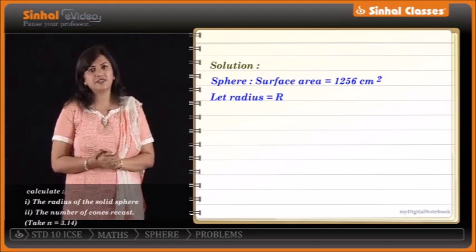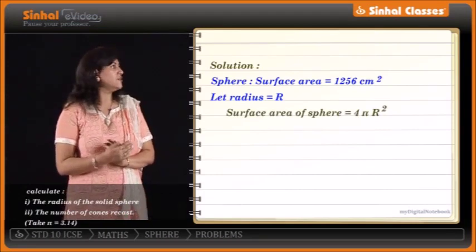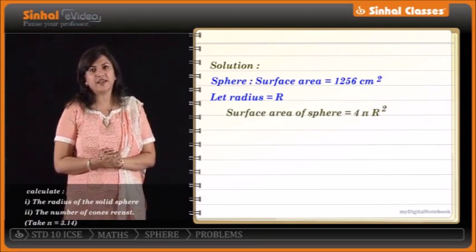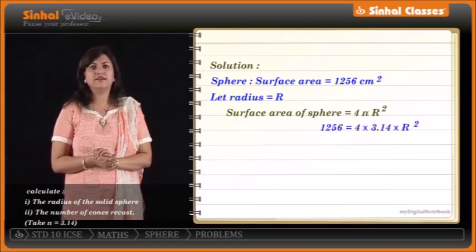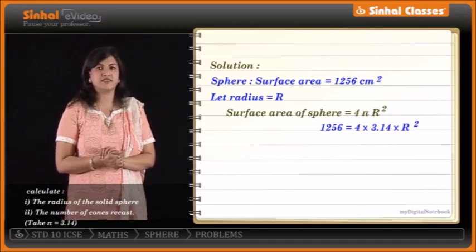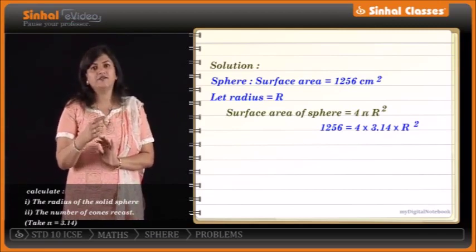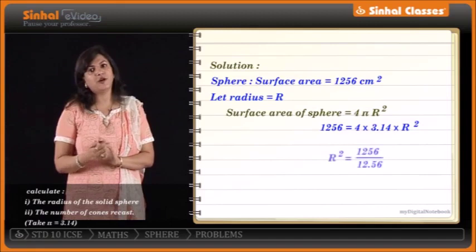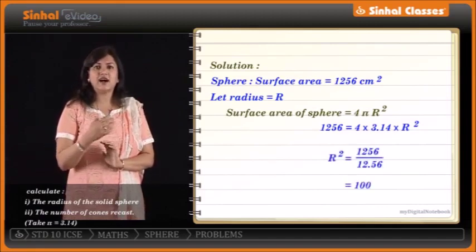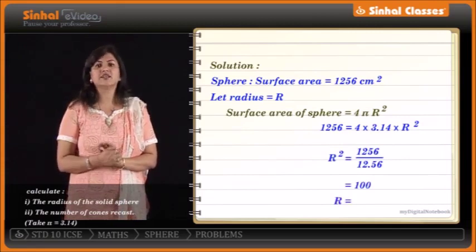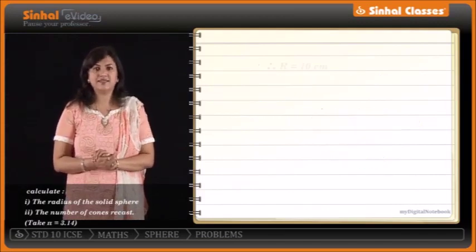Using the surface area formula: 4πR² = 1256, so 4 × 3.14 × R² = 1256. Therefore R² = 1256 / 12.56 = 100, so R = 10 cm (taking the positive value). The radius of the sphere is 10 cm.